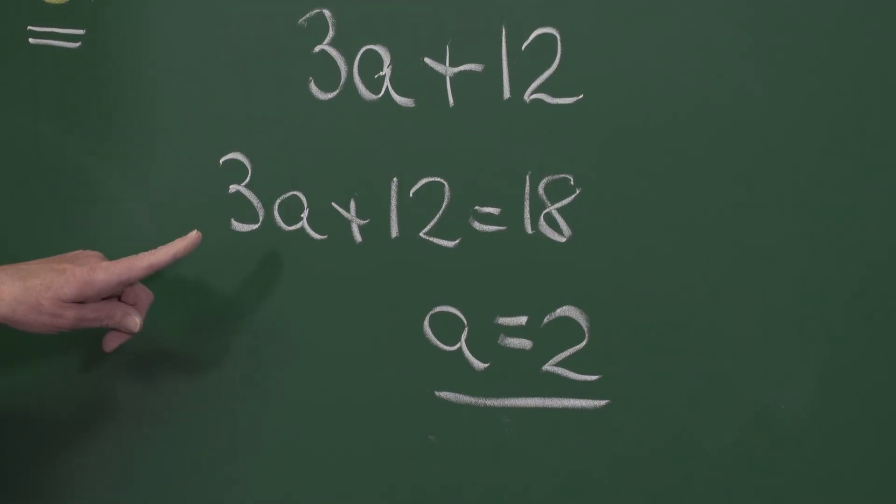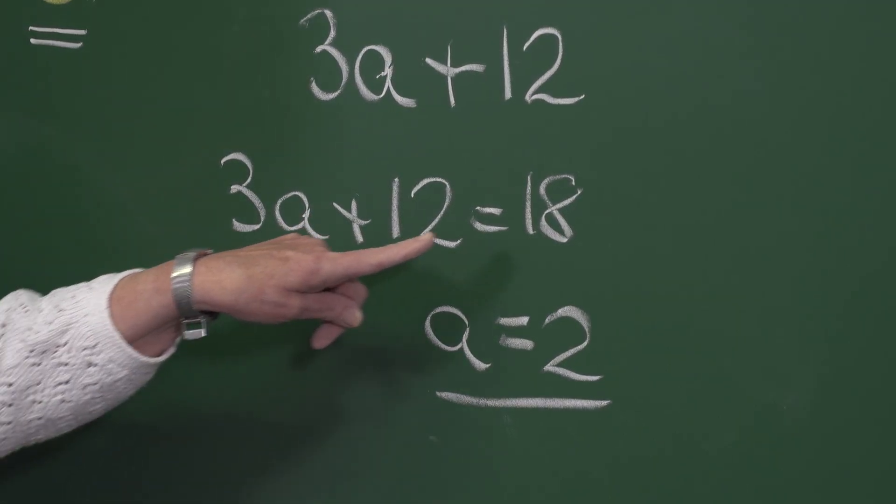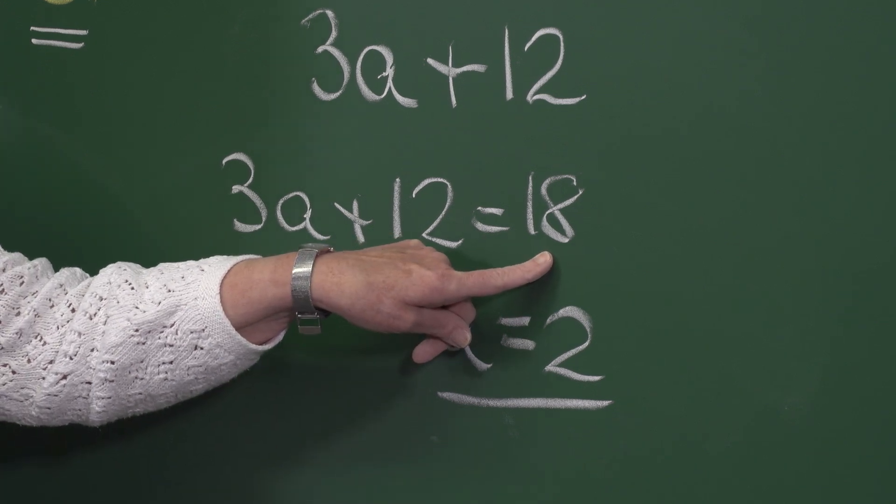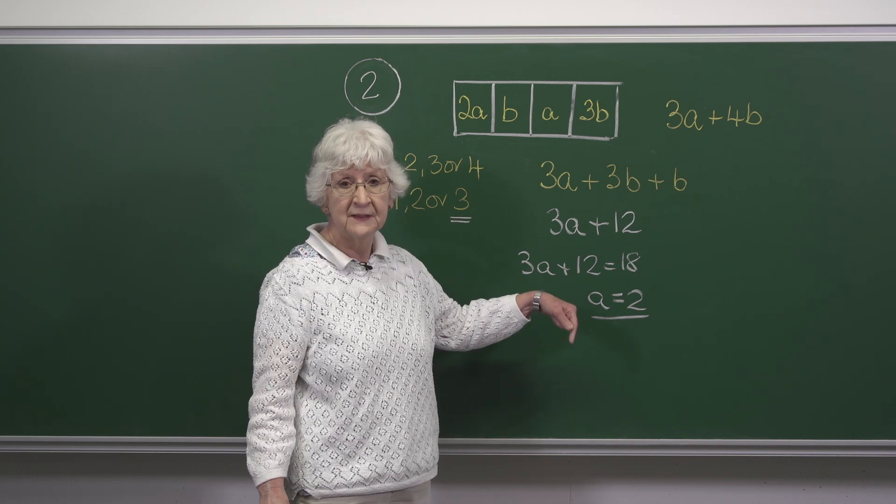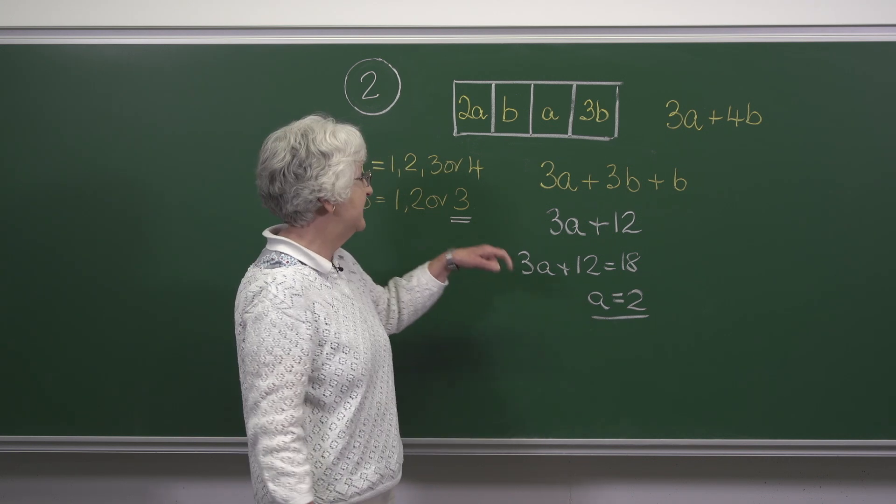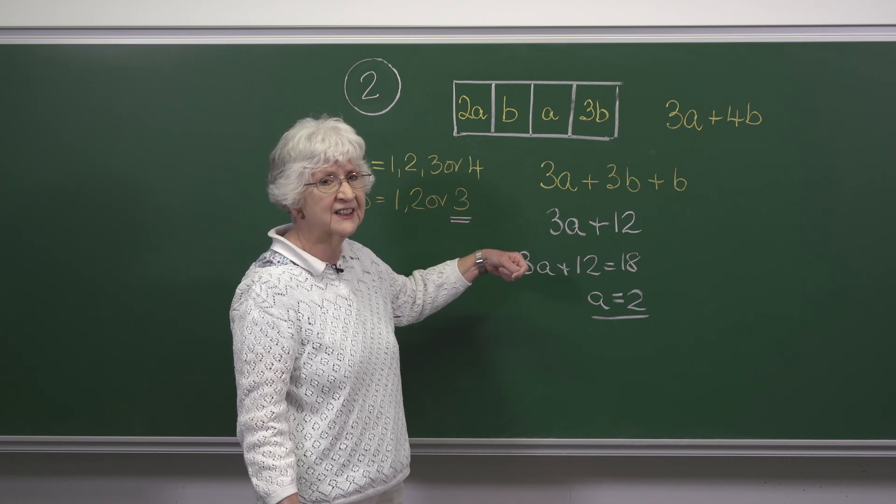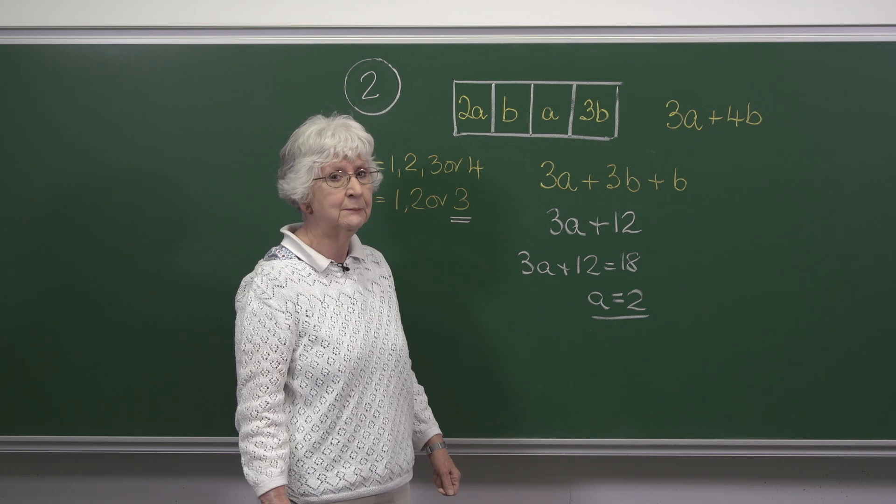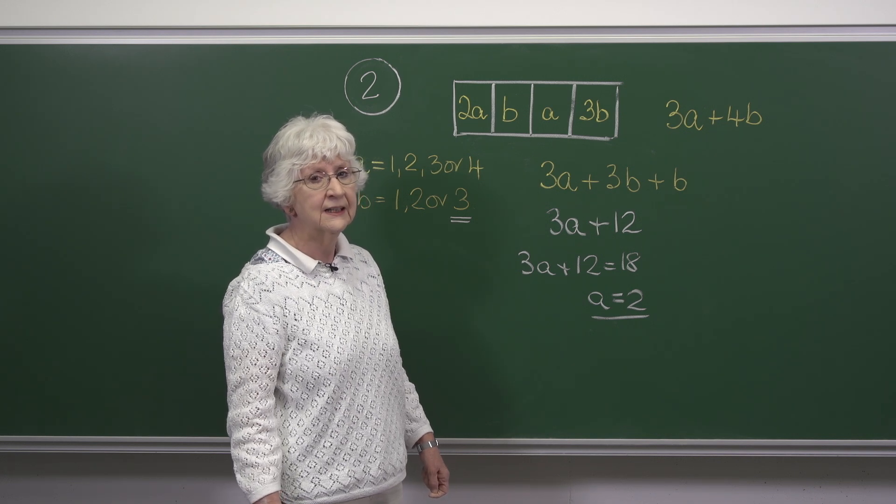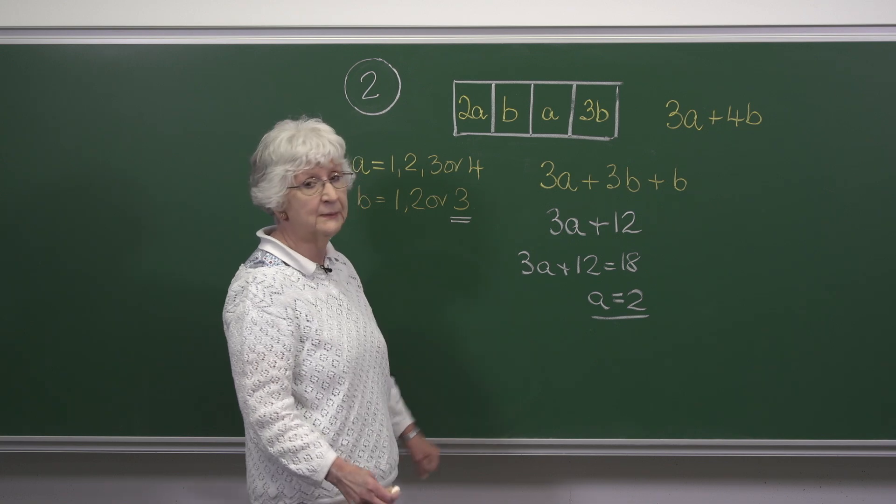Were we to consider 3a plus 12 equal the next multiple of 9 which is 27 that gives me 3a equals 15 and so a is 5 which is too big. And were we to consider any larger multiple of 9 a would continue to be more than 4 and so we have the solution a equals 2 and b equals 3.